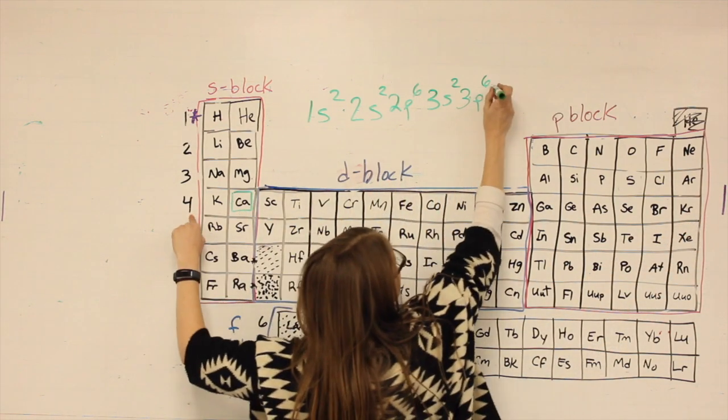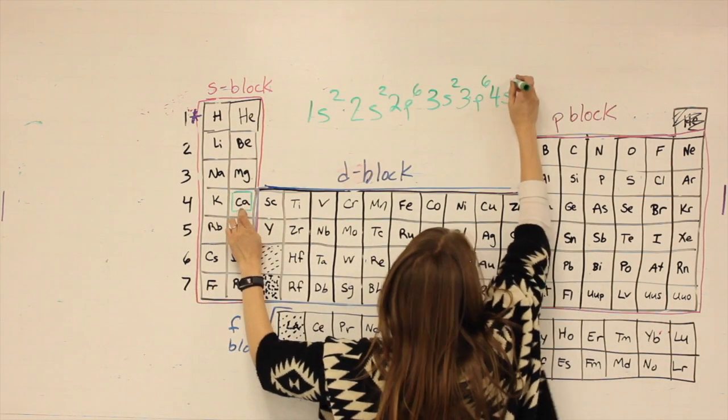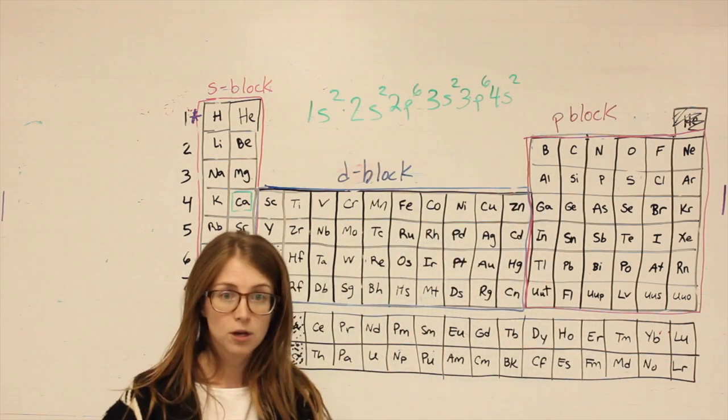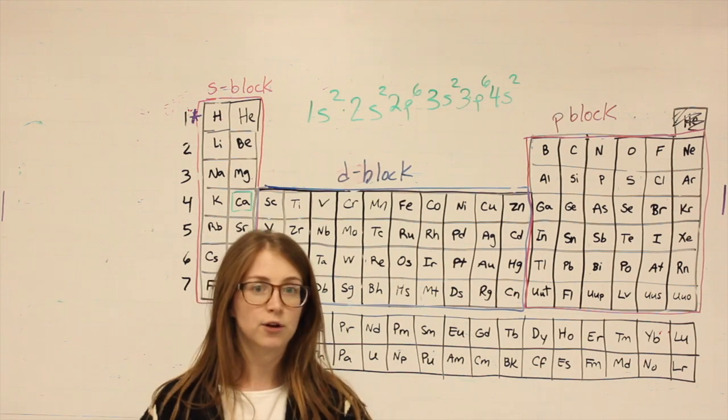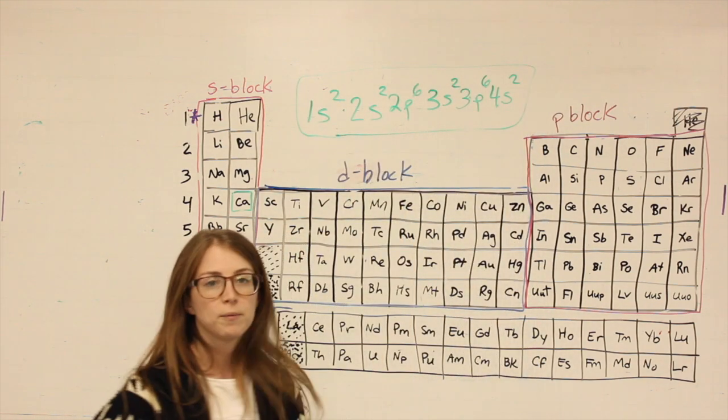Fourth row, S-block, two spaces in and it'll land on calcium. So my whole answer for the electron configuration for calcium would be that.